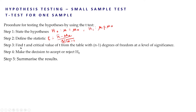In the third step, we find t and the critical value of t from the table with n−1 degrees of freedom at α level of significance. So we have to find the critical value of t from the table where the degrees of freedom is n−1 and level of significance is α.